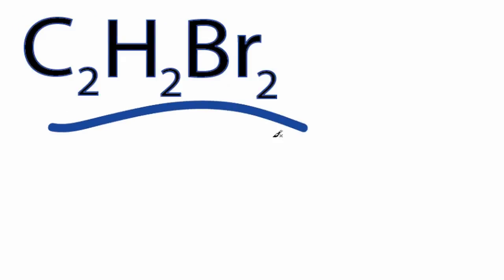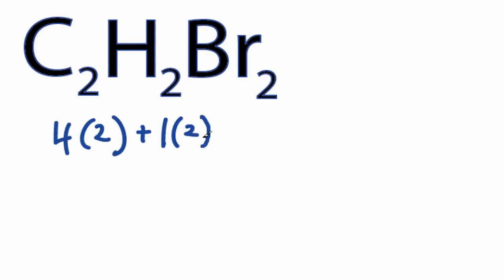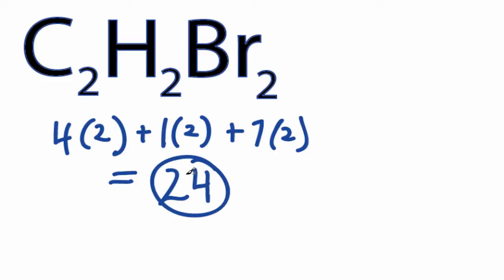This is the C2H2Br2 Lewis structure. We have 4 times 2, plus 1 for the hydrogen times 2, plus 7 times 2 for the bromine, for a total of 24 valence electrons for the C2H2Br2 Lewis structure.